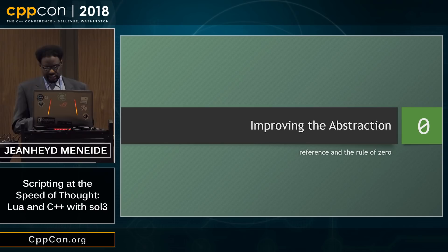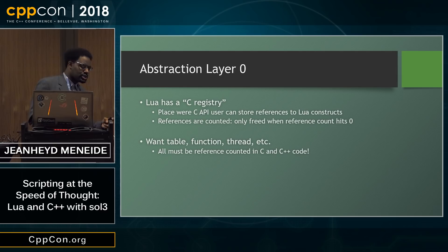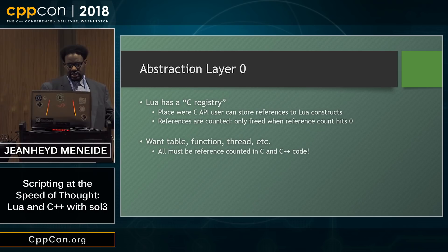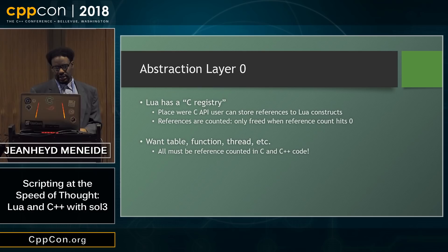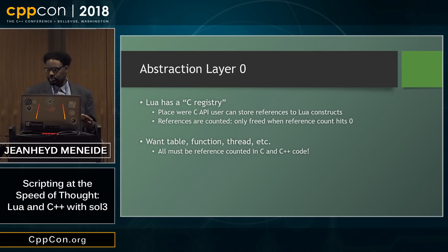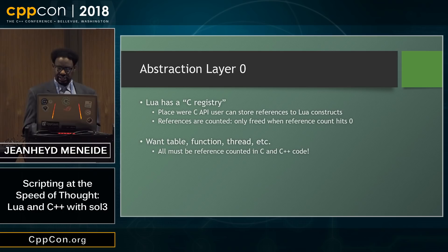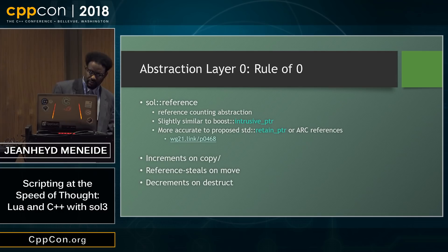Let's talk about improving this abstraction - we want to talk about references and the rule of zero. Abstraction layer zero is working with what Lua calls the C registry. It's a place where in the C API the user can store references to Lua constructs. They're all reference counted, and they're only freed when the reference count hits zero. We want to be able to use this ability to manage tables, functions, threads - all of which have to be reference counted in the C and C++ code that we write. So let's make a rule of zero type.